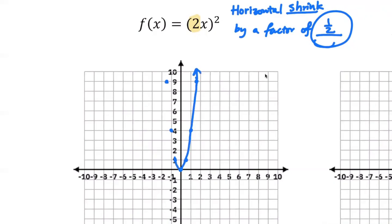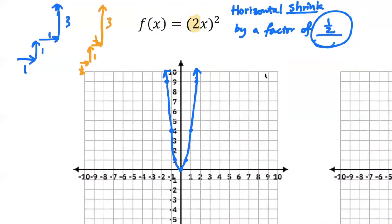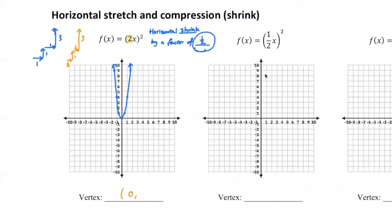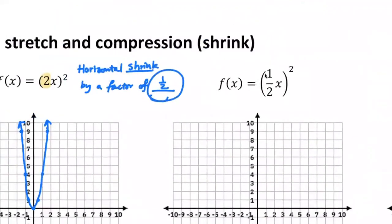There we go — that's what we have. Originally we move right one unit up one, right one unit and up three. Now we're saying horizontal shrink by one half, so we just do half a unit, still up one; half a unit, still up three. That's the horizontal shrink — it gets a lot easier when you practice a few more times. The vertex is still zero-zero. Once we have the correct interpretation, we can do the sketch very easily.